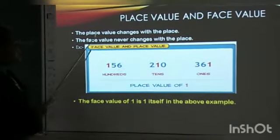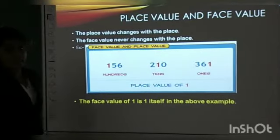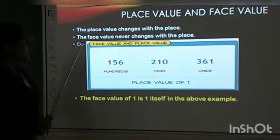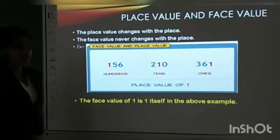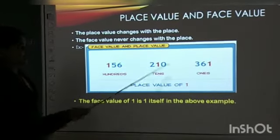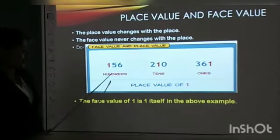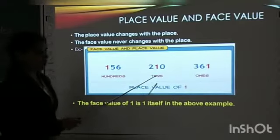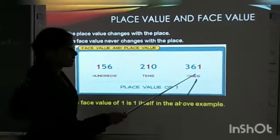See this example. Place value changes with the place. The face value never changes with the place. Here, the highlighted number is one. The first number is one hundred and fifty-six, then two hundred and ten, and three hundred and sixty-one.